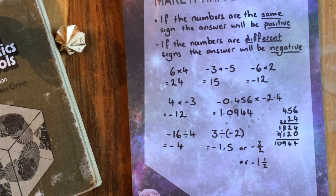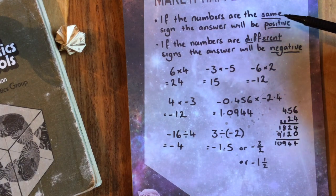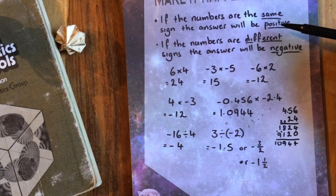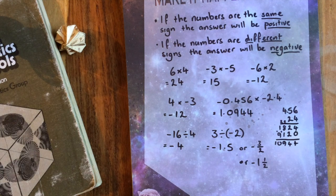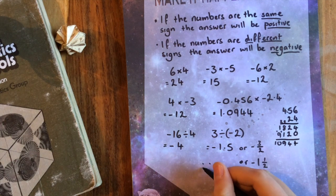If the numbers have the same sign, the answer will be positive. If the numbers have a different sign, the answer will be negative. And hopefully now you can multiply and divide negative numbers, so the world can't stop you now. Thank you. See you next time.